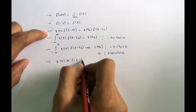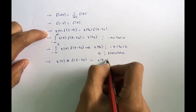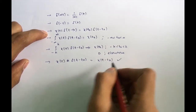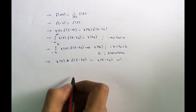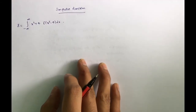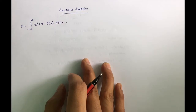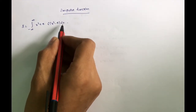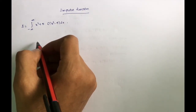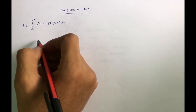The impulse function convolution property gives x(t) * δ(t) = x(t - t₀), which is a very important and useful property. Now let's return to the sum we wrote previously: the integral of (x² + 4) · δ(x² - 4) dx. We need to break δ(x² - 4) into two impulse functions.